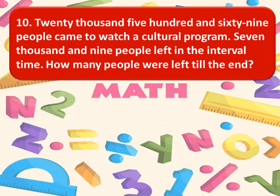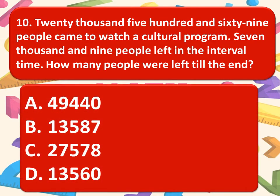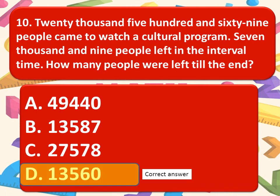20,569 people came to watch a cultural program. 7,009 people left in the interval time. How many people were left till the end? Here are the options. Choose the correct option. And the correct option is option D. 13,560.